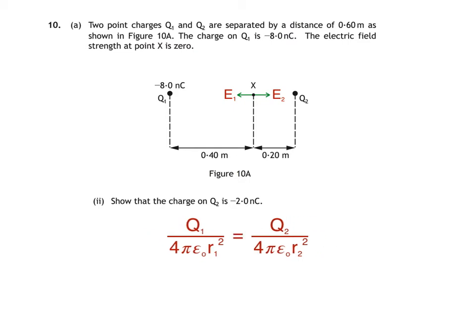Next, we can cancel the terms which appear on both sides to simplify our equation. Substituting our values gives us this. Finally, we can make Q2 the subject by multiplying both sides by 0.20 squared, which gives us negative 8.0 times 10 to the negative 9 times 0.20 squared divided by 0.40 squared, which equals the desired answer of negative 2.0 times 10 to the negative 9 coulombs.